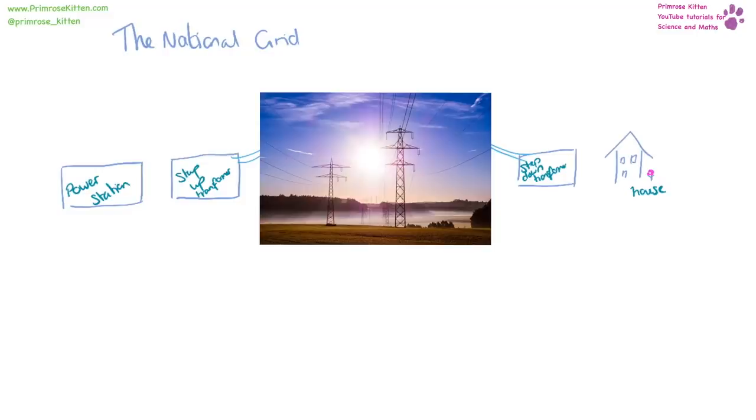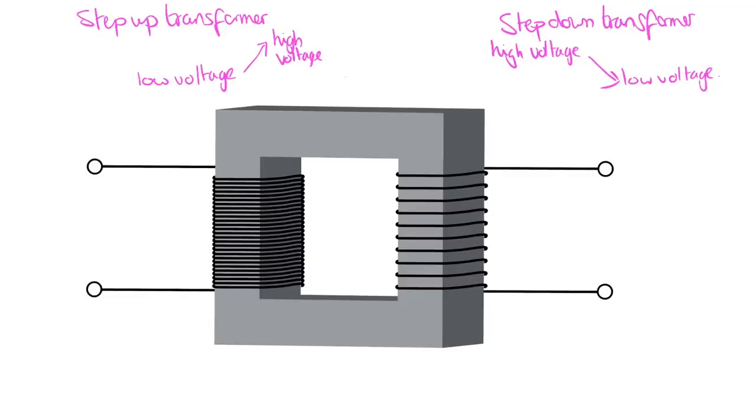The national grid is how we get electricity from power stations to our houses. The power stations generate the electricity, and they move it to a step-up transformer, and then through a network of cables and pylons. This gets moved across the country to a step-down transformer, and then into our houses. Step-up and step-down transformers are an important part of our national grid. They work by having a varying number of coils on each side, depending on whether it's a step-up or a step-down transformer. A step-up transformer will take it from a low voltage into a high voltage, so that the energy can move through a system with less energy loss, making it more efficient. Whereas a step-down transformer will take it from a high voltage into a low voltage, so it's safe to be in our homes.